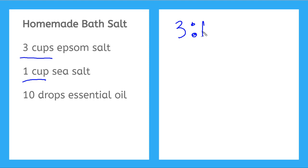Now what is the rate of epsom salt to sea salt? If I want to write this as a rate, I'm going to write three over one. But I can simplify a fraction that has a one on the bottom, that is just three. So this number represents my rate of epsom salt to sea salt.